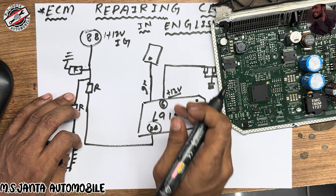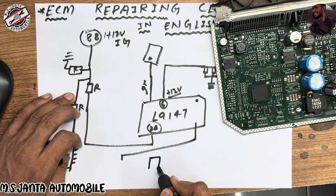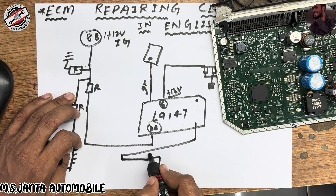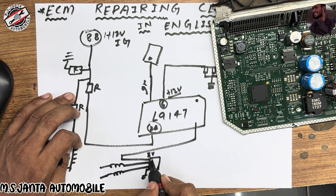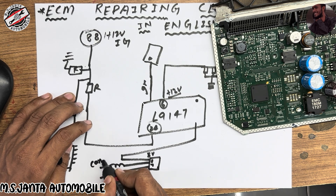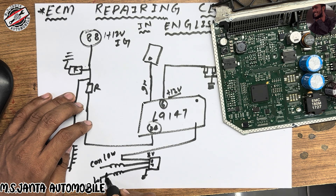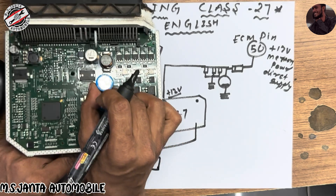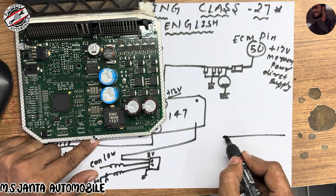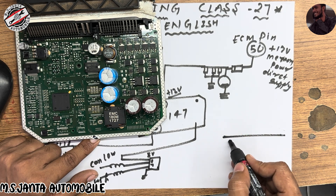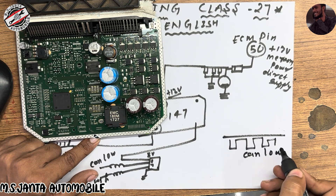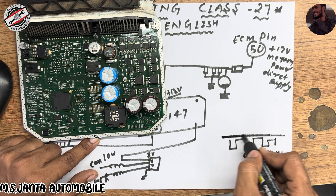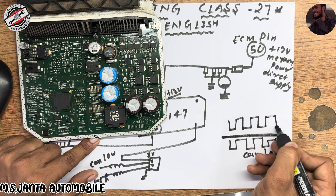When ignition turns on, this IC outputs 5 voltage which goes to CAN IC pin number 5. Pin 5 gets 5 voltage, and there is a ground connection. Pin 6 is CAN low and there is CAN high. If you check with a DSO or oscilloscope, the CAN signal will appear from the middle line — CAN low shows from one side and CAN high shows from the upper side of the line.